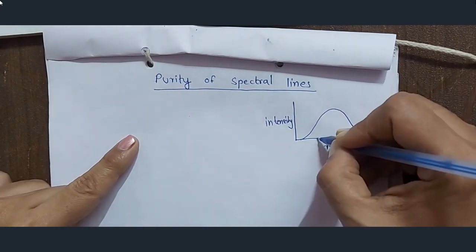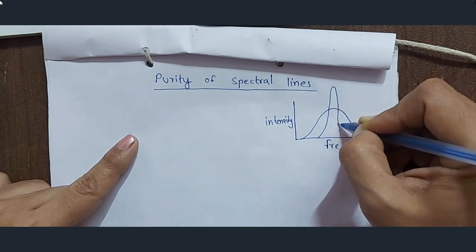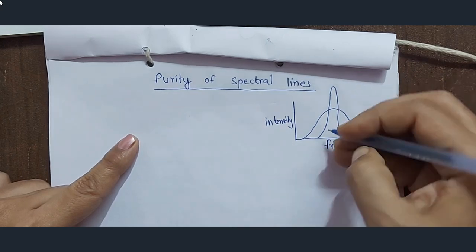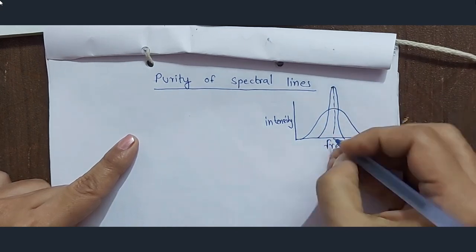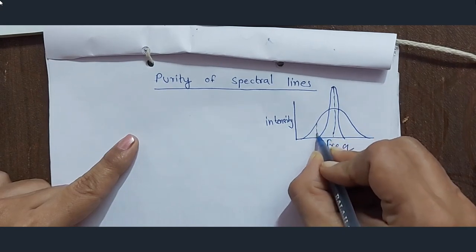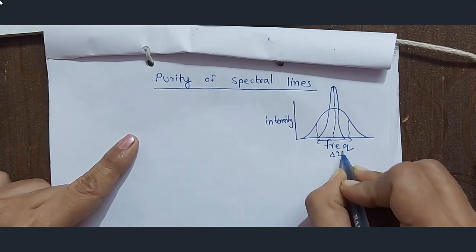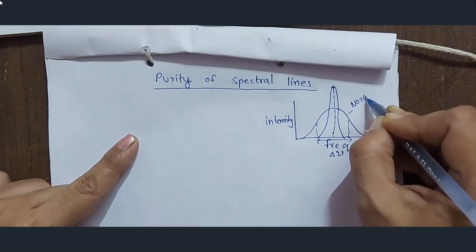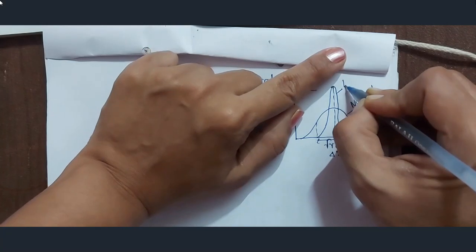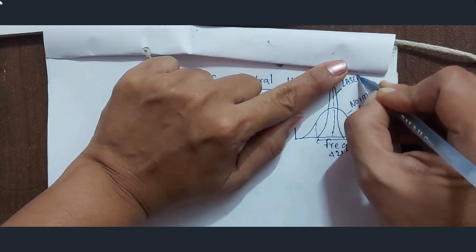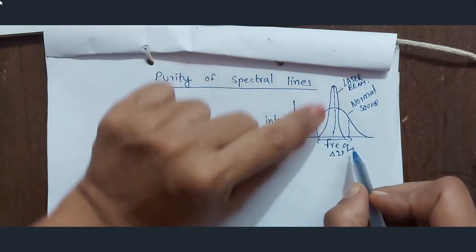If we plot a graph between frequency and intensity, this will be the graph of ordinary light, and when we draw laser it will be somewhere like this. This is the central frequency, and this range — delta nu — corresponds to the normal ordinary source, whereas this is the spectral line of the laser beam.